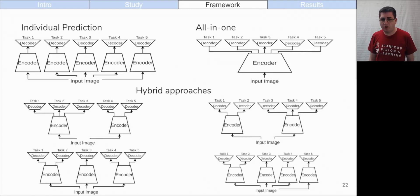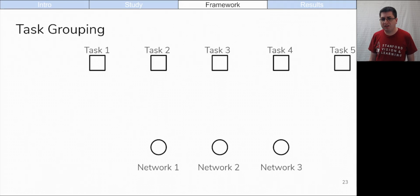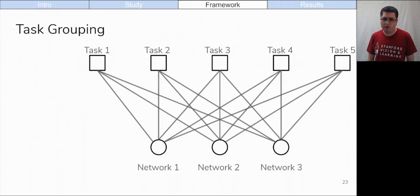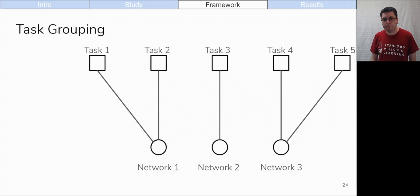This is a combinatorial problem. So for a given number of tasks and a given network budget, it becomes a problem of bipartite assignment. Every task must be assigned to a network. In other words, we must pick a subset of these edges subject to the constraint that every task must be connected to some network. For this example, we have a budget of three networks. This choice of edges means that task 1 and task 2 are grouped together and solved by network 1. Task 3 is grouped alone and solved by network 2. And tasks 4 and 5 are grouped together and solved by network 3.